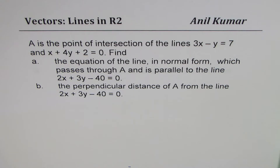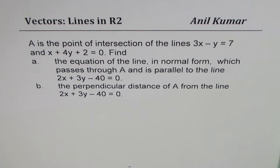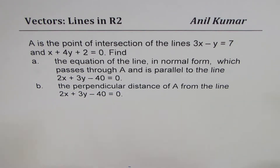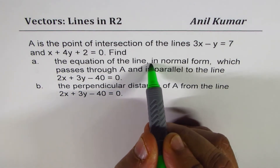The question here is: A is the point of intersection of the lines 3x minus y equals 7 and x plus 4y plus 2 equals 0. Part A: find the equation of the line in normal form which passes through A and is parallel to the line 2x plus 3y minus 40 equals 0. Part B: find the perpendicular distance of A from the line 2x minus 3y minus 40 equals 0.